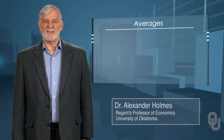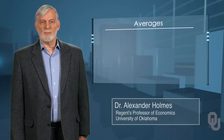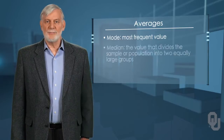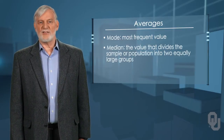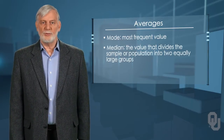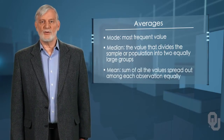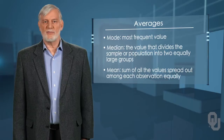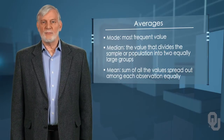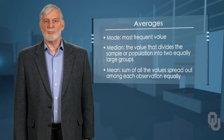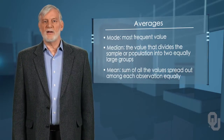In this unit, we will explore the relationship among the three averages we discussed last time. Remembering that the mode is the most frequent value in the sample or population, the median is the value that divides the sample or population into two equally large groups, and the mean is the sum of all the values spread out among each observation equally. We get the mean by dividing the sum by the sample size or population, depending upon our data set.